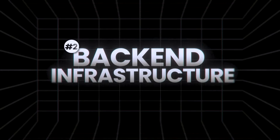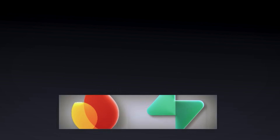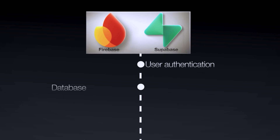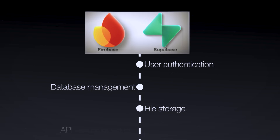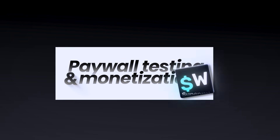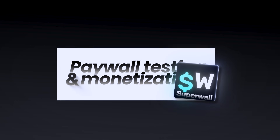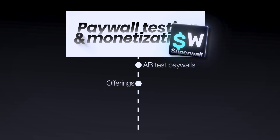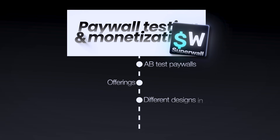Method number two: set up backend infrastructure. This is a highly contentious topic. I'm not an expert here, but I'm going to speak from experience as well as from what I've seen other successful applications do. First, use Supabase or Firebase — these services can handle user authentication, database management, file storage, API endpoint setup, and more. For paywall testing and monetization, I recommend using Superwall, which will enable you to A/B test your paywalls as well as offerings at different points in your app with different designs in real time.